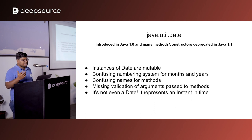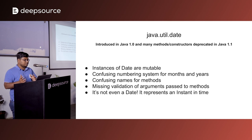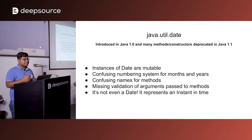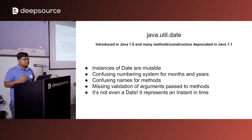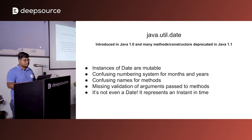Some of the problems the Java Date API had — which also apply to JavaScript — include: date objects created were mutable, so after a date was created you could change its value. The numbering systems for months and years were confusing. Method names are confusing and there is missing validation — certain arguments that methods accepted were not validated. And finally, though it is called "date," it actually represents an instance in time rather than a date.